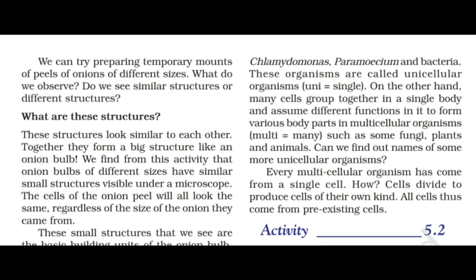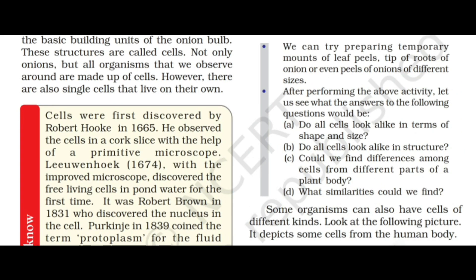The cells of the onion peel will all look the same regardless of the size of the onion they came from. These small structures that we see are the basic building units of the onion bulb. These structures are cells.